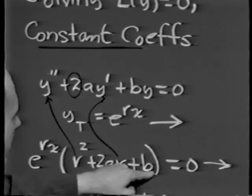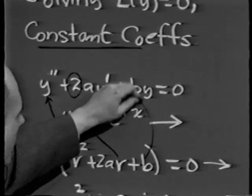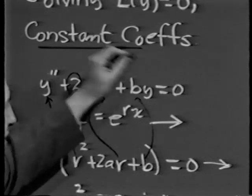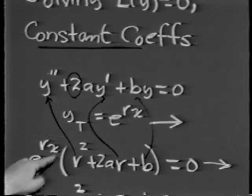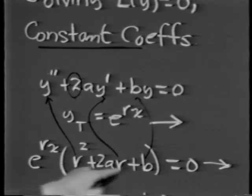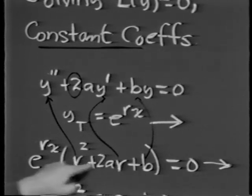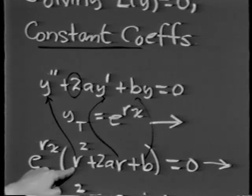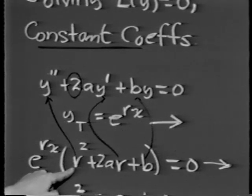Mechanically, notice that the power of r replaces the given derivative: r squared replaces y double prime, r to the first power replaces y prime, and the r to the 0 term replaces y itself. Since e to the rx cannot be 0, we set this polynomial — in this case a quadratic — equal to zero to find the values of r. The same theory holds for order greater than 2; I simply use second-order equations for illustrative purposes.